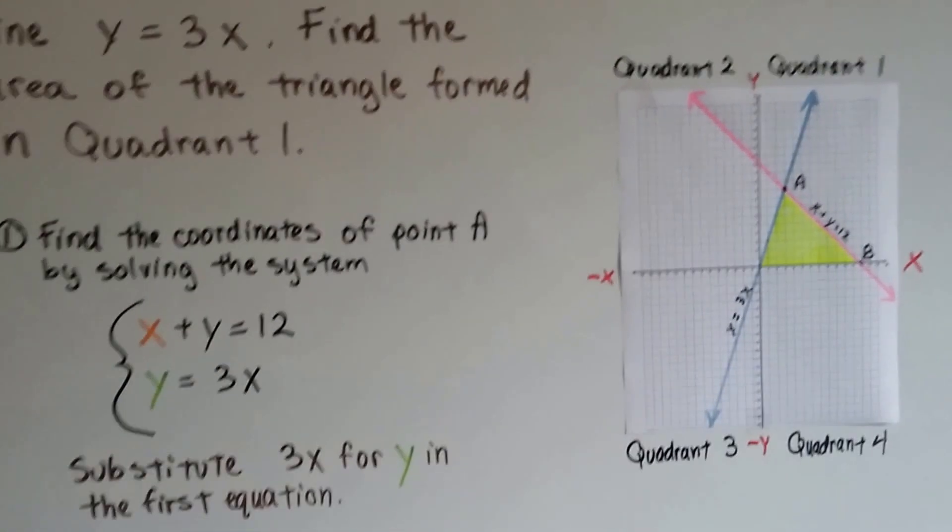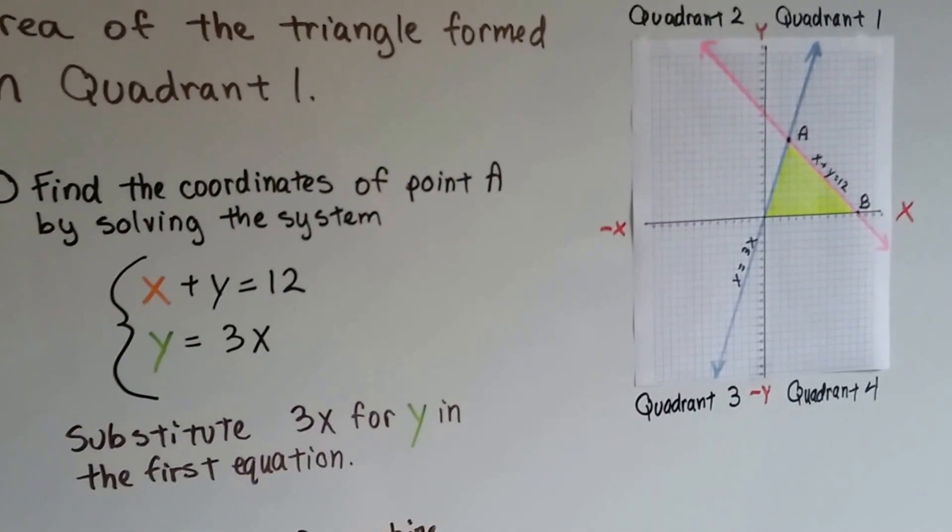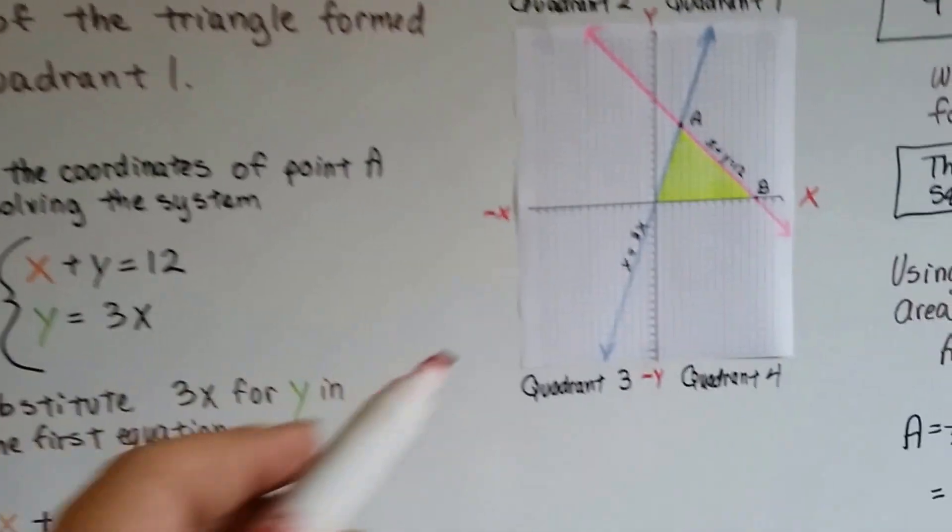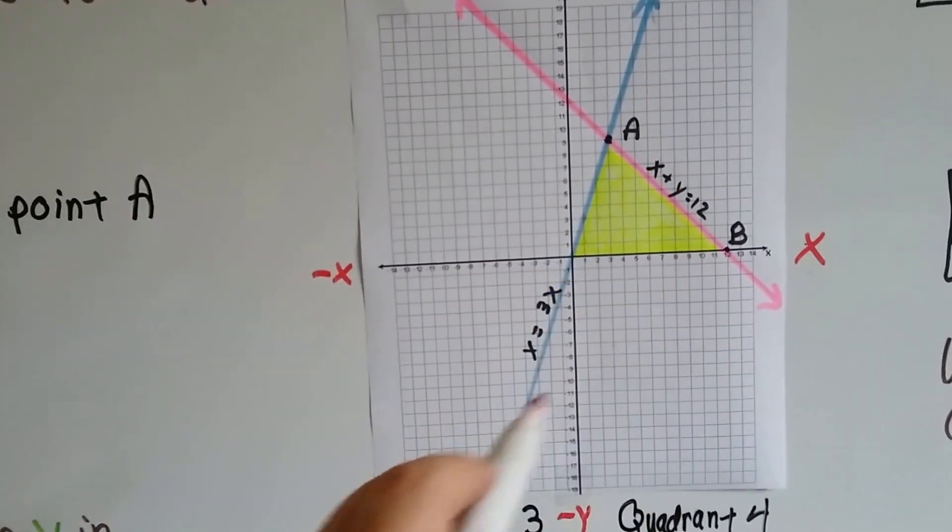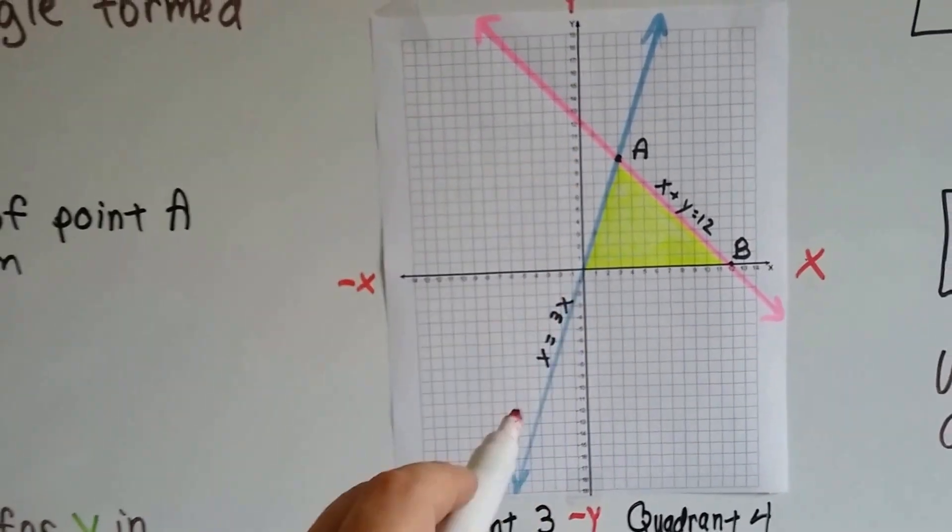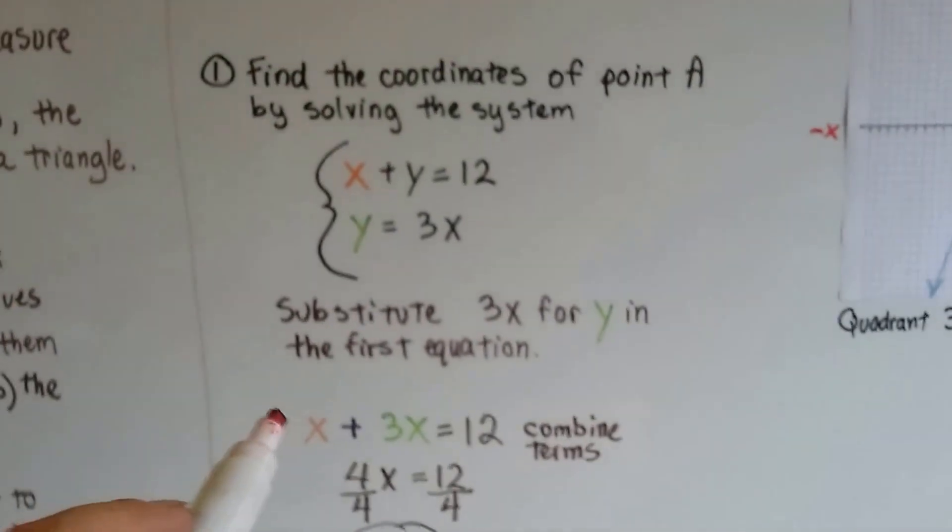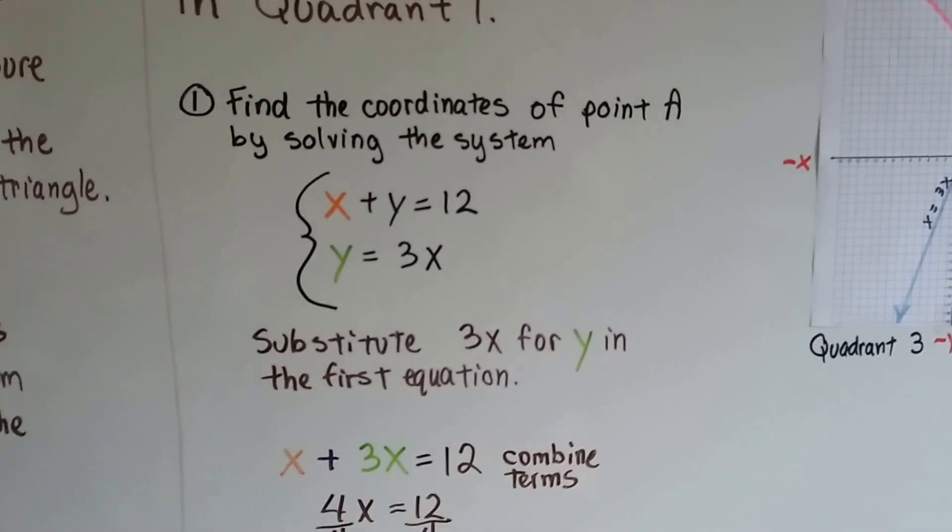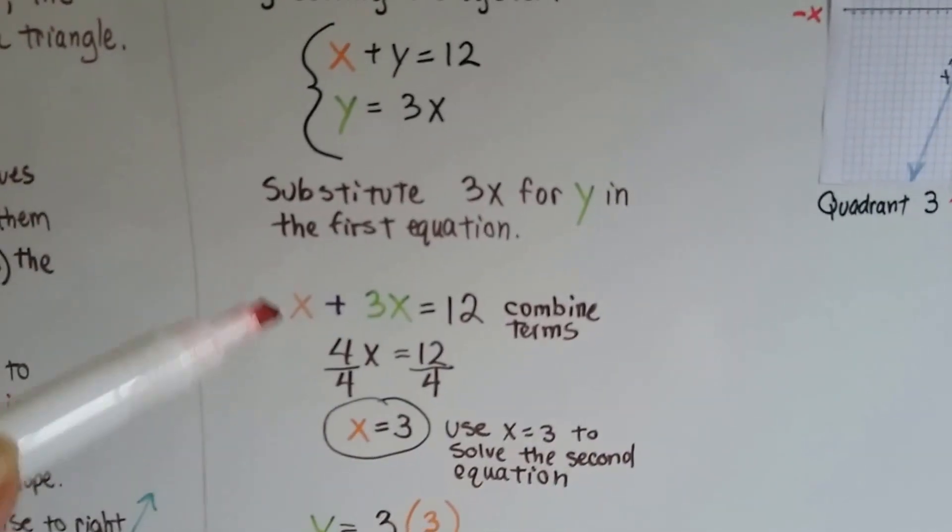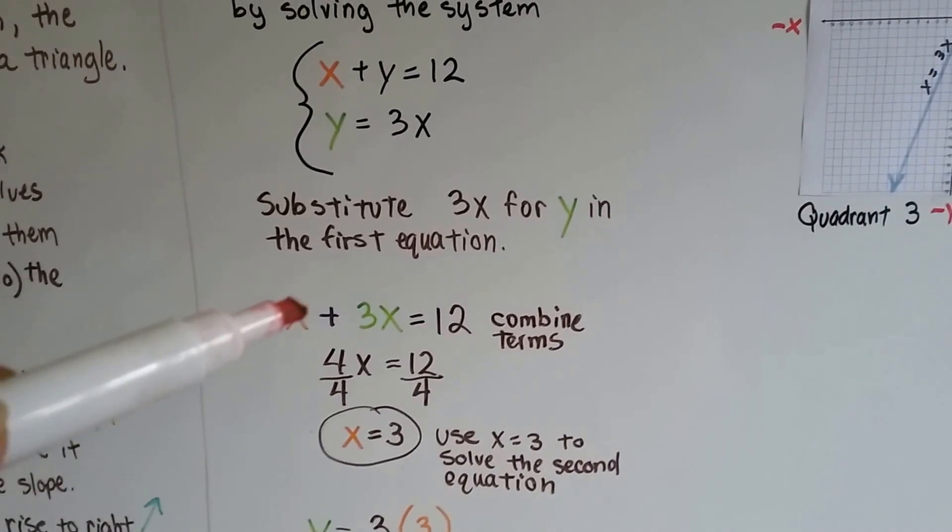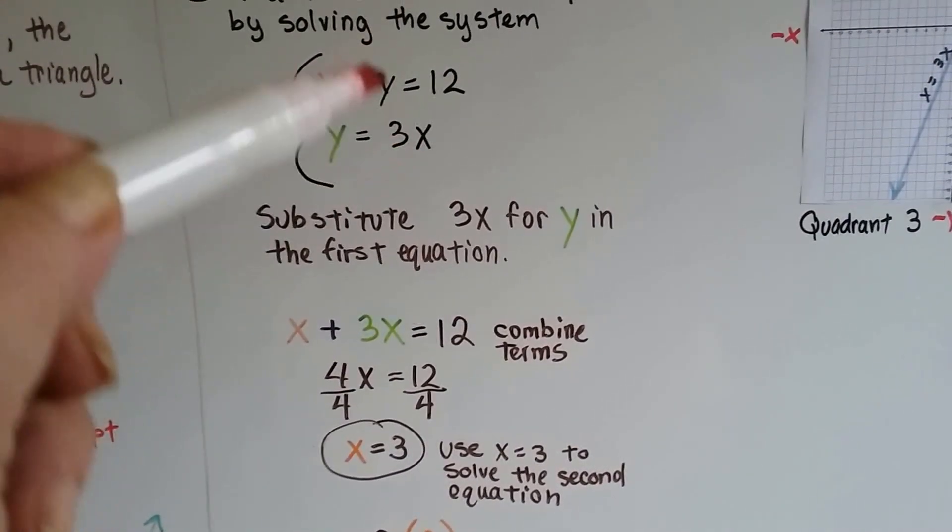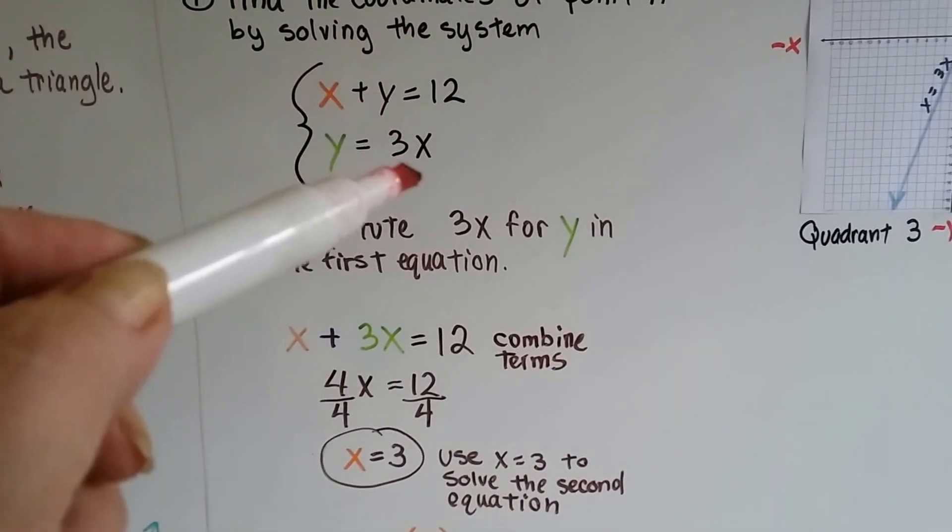So, the first thing we do is find the coordinates of point A by solving the system. And here's the two equations, the system of equations. See? We've got x plus y equals 12 and we've got y equals 3x. I'm going to substitute this 3x for y in the first equation. So, that gives us x plus 3x equals 12 because we've replaced that y. We've substituted it with the 3x.